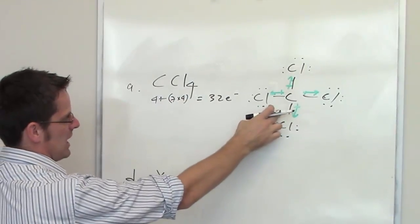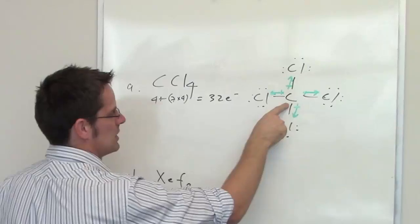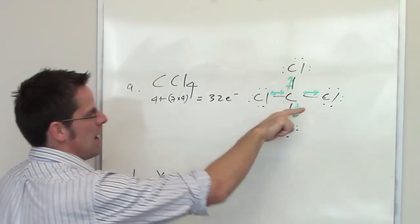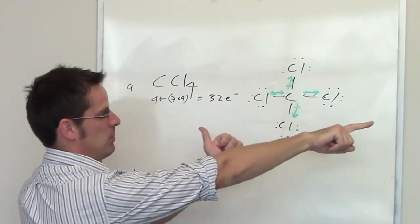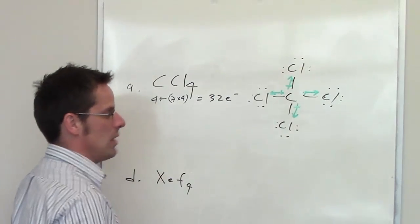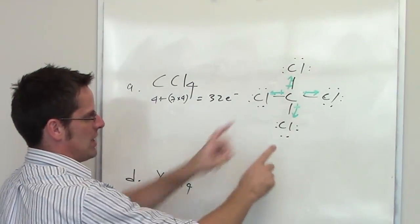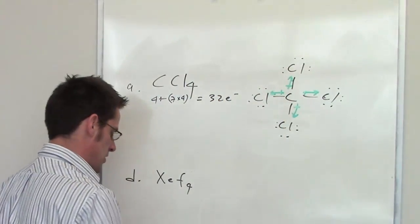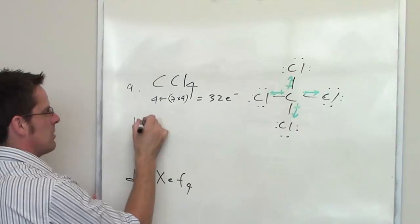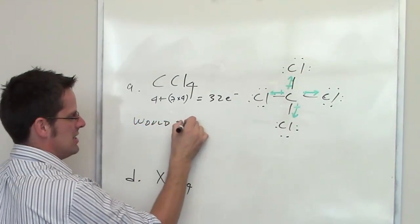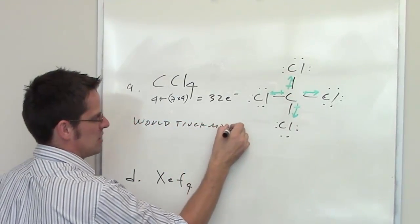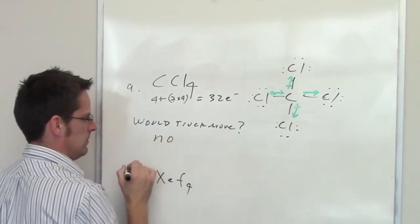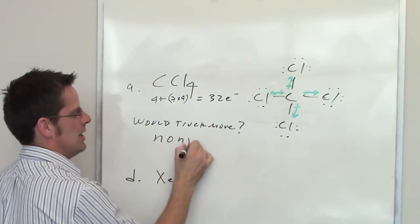Anyway, so if I look at this thing, you can imagine carbon being a truck stuck in the mud. I've got a chlorine pulling to the right, a chlorine pulling to the left. Those chlorines are equally strong relative to each other, so they cancel each other out. I've got a chlorine pulling up, a chlorine pulling down. Same thing, they all cancel each other out. So would this truck move? So I'll write down, would truck move? The answer is no. So this molecule is non-polar.